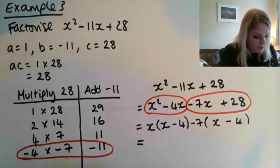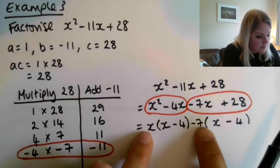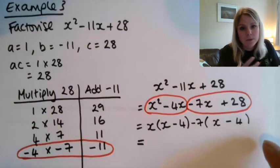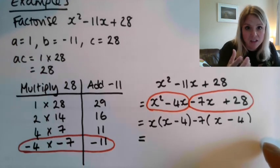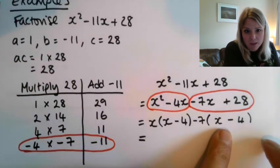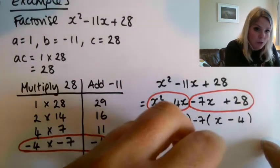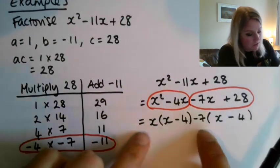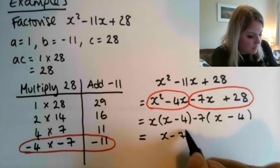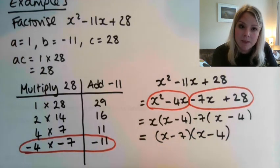Now we've got two big terms. We've got this and this. So we can factorize again. And it's always going to be the same way. The thing that is common to both is the bit that's in the brackets, because we went out of our way to make that be the case. So x minus 4 is the common term that we can factorize out. And then we're left with x minus 7. So x minus 7, x minus 4. And that's our answer.